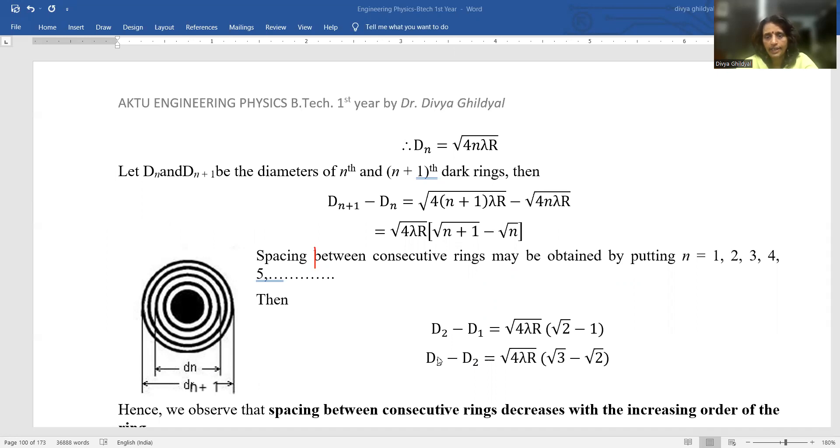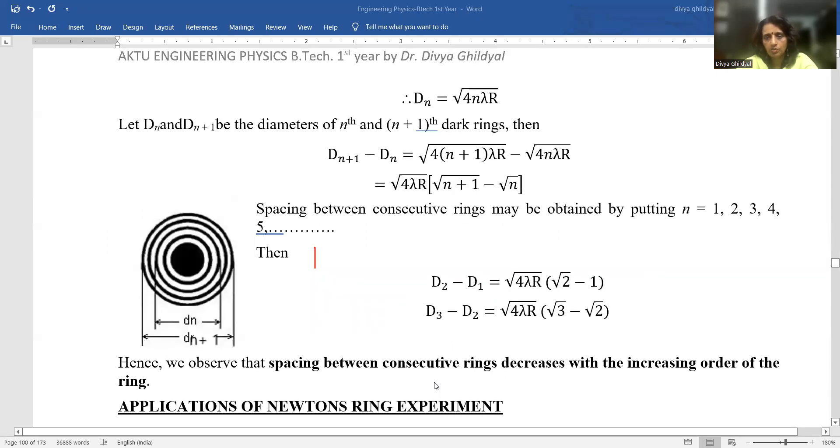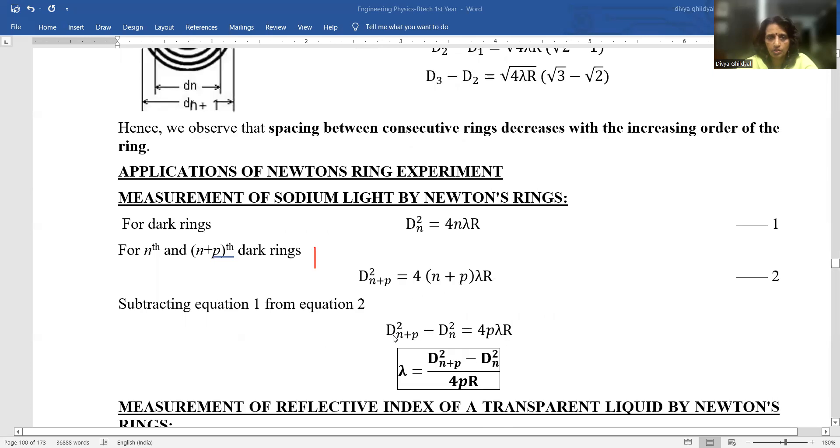Spacing between consecutive rings may be obtained by putting N = 1, 2, 3, 4 and I get the spacing between consecutive rings decreases with the increasing order of the ring. This question has been asked in section C.